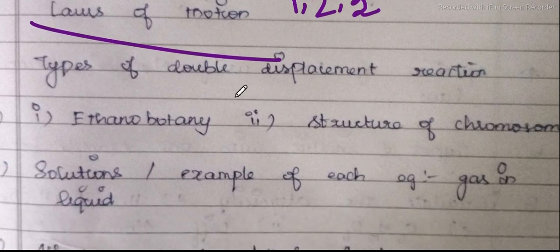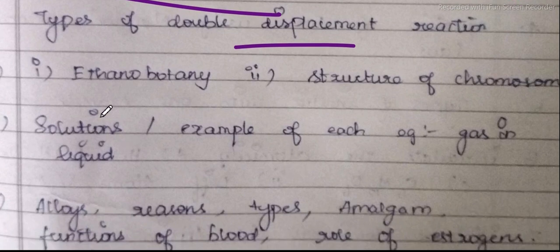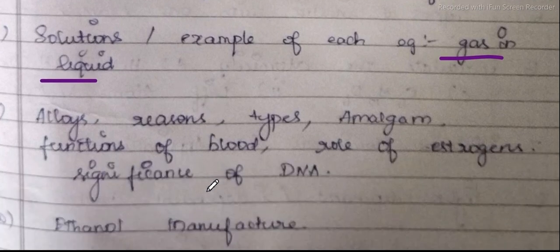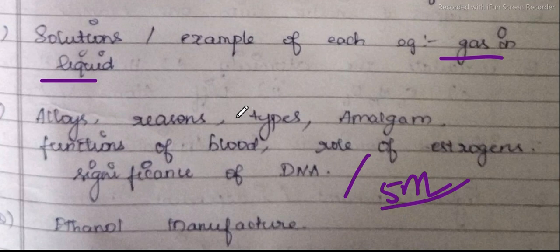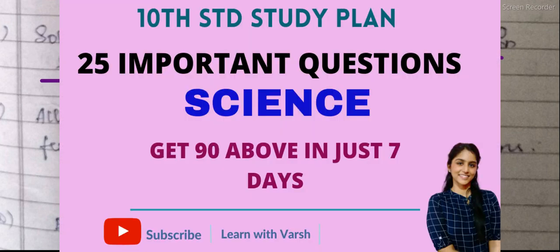Next is the 16th question: types of double displacement reaction — 10th lesson. Also the structure of chromosomes. Then the solution lesson: saturated solution, unsaturated solution, dilute solution, concentrated solution — these are all definitions. Plus gas and liquid examples, solid and solid examples, gas and solid. These are the top 25 five-mark questions.